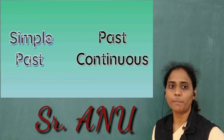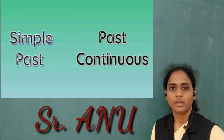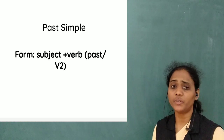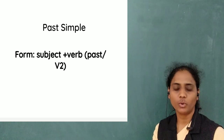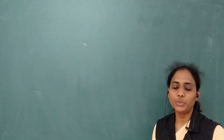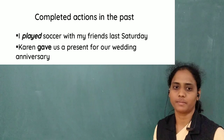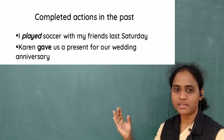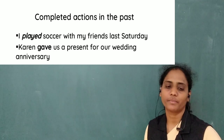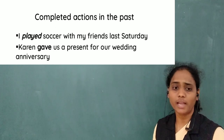Let us now talk about the past simple and past continuous. We make the past simple tense with a subject and a verb in the past form. This tense is used to talk about completed actions in the past. For example, I played soccer with my friends last Saturday. Karen gave us a present for our wedding anniversary.